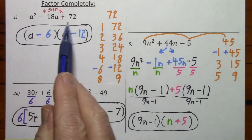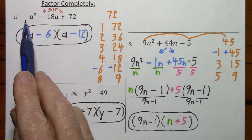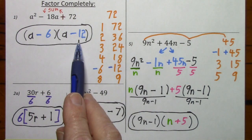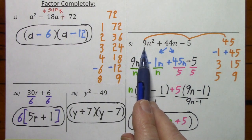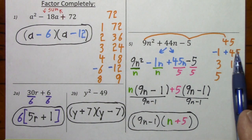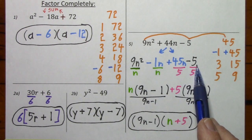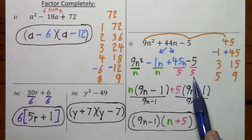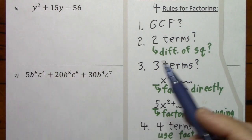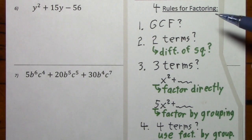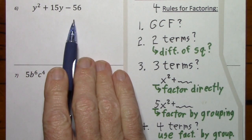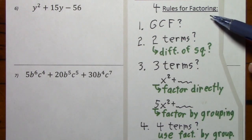Briefly: with a trinomial with leading coefficient of one, we factor directly — we go directly from the correct factor pair to the answer. With a leading coefficient other than one, we use factor by grouping — we go from the correct factor pair to a four-term polynomial, then group together the first two, group together the last two, and so on. You might not need to refer to the rules every time, but if you hit a polynomial where you don't know what to do, refer to the rules to help you get started.